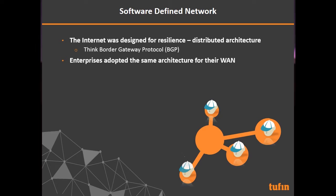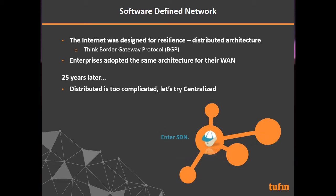Software-defined networks are also interesting. The internet was designed for resilience — a distributed architecture like BGP — and enterprises adopted that for the wide area network. But 25 years later, large enterprises and telcos have a huge mess: a vastly distributed architecture that is very complex and difficult to manage. SDN tries to centralize all of that. It's also an attempt to reduce vendor dominance by using cheap off-the-shelf servers with a software controller, enabling network management through APIs.